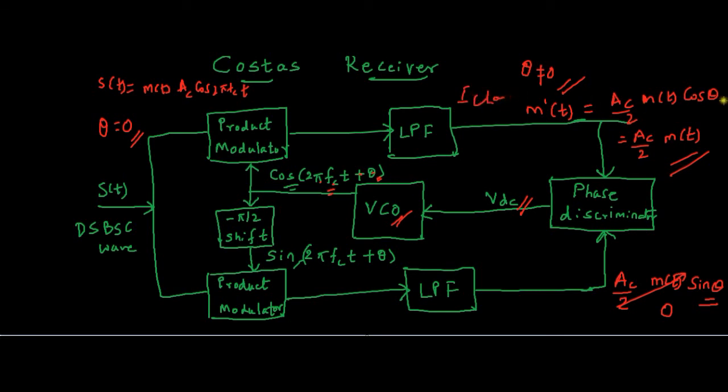If θ = 0, the I-channel gives the message signal output and the Q-channel is 0. That is the working of Costa's receiver. If you have any doubts, please use the comment section, and if you need any study material regarding Costa's receiver, I will be happy to mail you. Please subscribe to our channel and spread the word. Thank you.